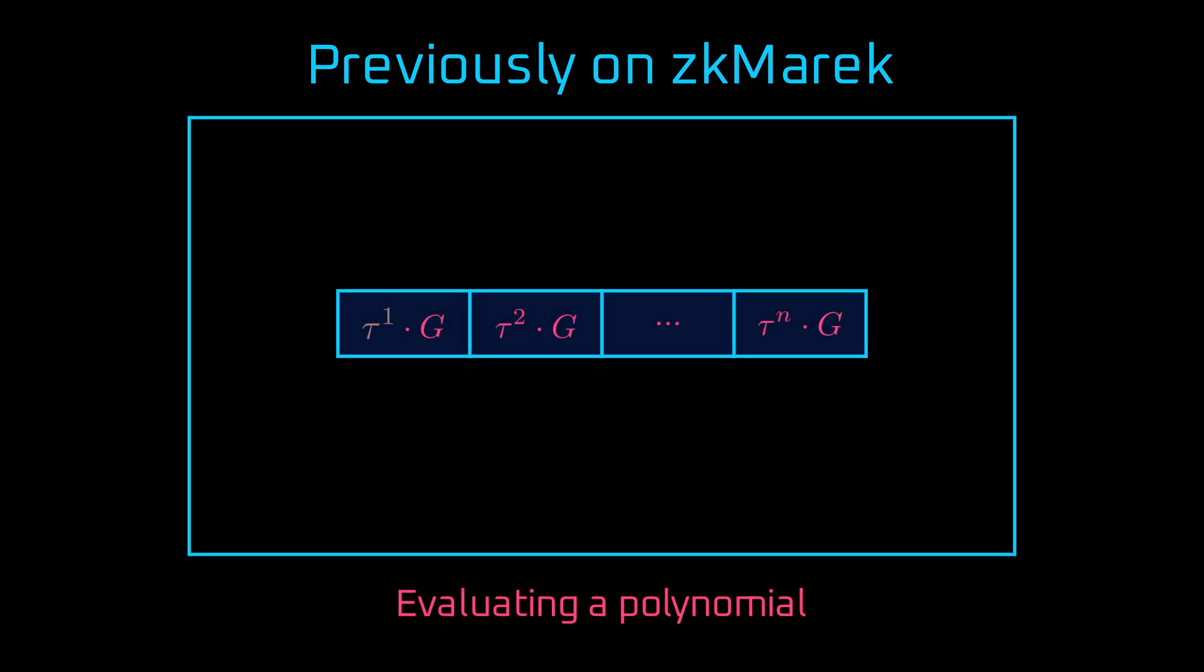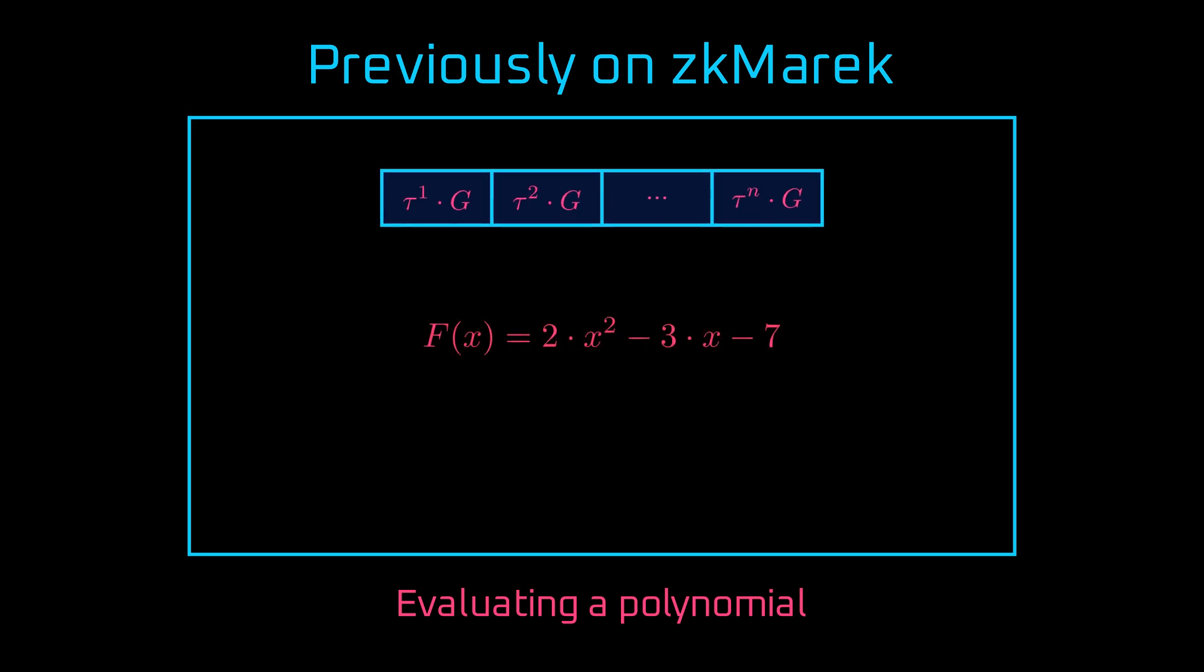The only thing known to all of them is the sequence of powers of tau encrypted by the generator point G, in the form of elliptic curve points. Thanks to that, we can calculate the value of the polynomial at tau encrypted by multiplication by G.